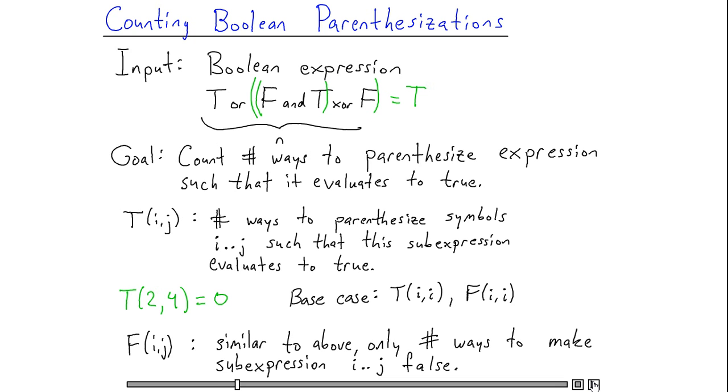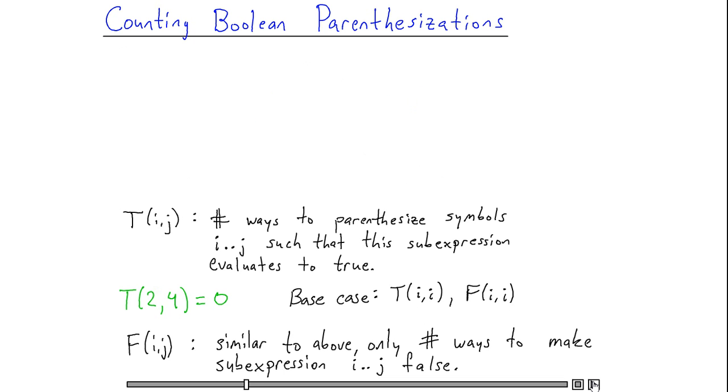As base cases, it's going to be very easy to compute T(i,i) and F(i,i) for all values of i. I'm then going to compute T(i,i+1) and F(i,i+1) for all values of i, then T(i,i+2) and F(i,i+2) for all values of i, and so on. So basically, I'm going to be building up solutions to larger and larger sub-expressions as I proceed.